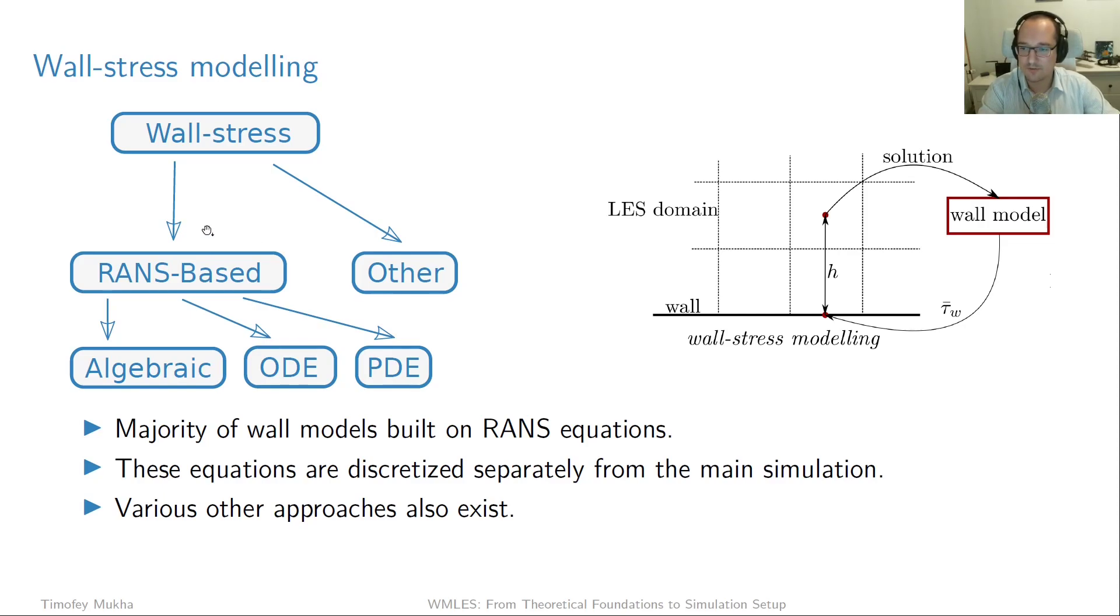Now, the difference between the wall stress modeling classes is then how this correct value of tau wall is computed. And we distinguish two sets of approaches. One set is based on RANS equations, and the other set is basically all the other existing approaches. So as that implies, for RANS-based methods, the equations inside the wall model are based on RANS. So some of them solve full RANS equations, leading to PDE-based wall stress modeling models, and some of them introduce certain simplifications, leading to ODE formulations or algebraic formulations. Now, the crucial point is, as discussed before, that the discretization of any of these equations happens separately from the discretization of the LES domain.